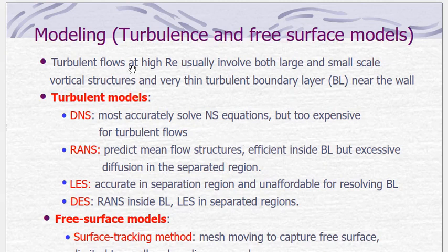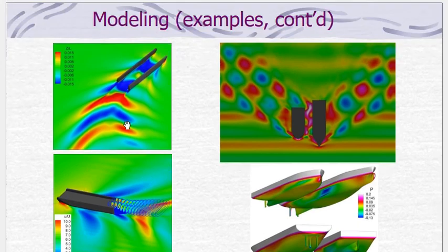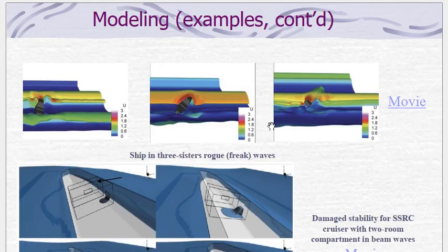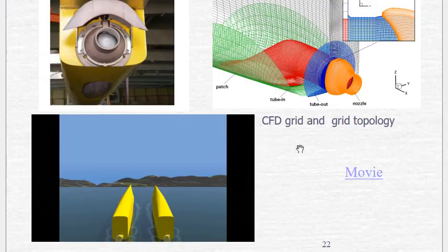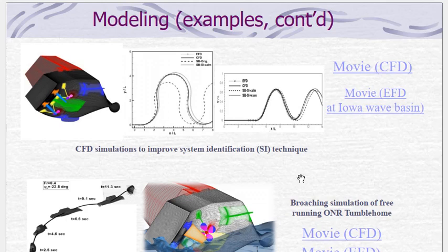Turbulent flows at high Reynolds numbers usually involve both large and small scale vortical structures — these are the vortices that form across the region when we perform our analysis. Here are examples of different CFD results performed on different elements. The legend shows the maximum and minimum values of stresses. One example shown is the Kármán vortex shedding, which we will cover in more detail in the next lecture.